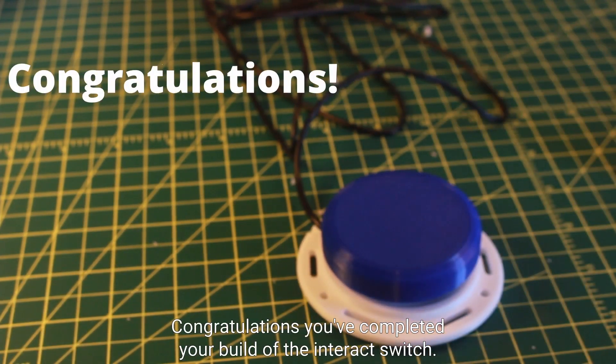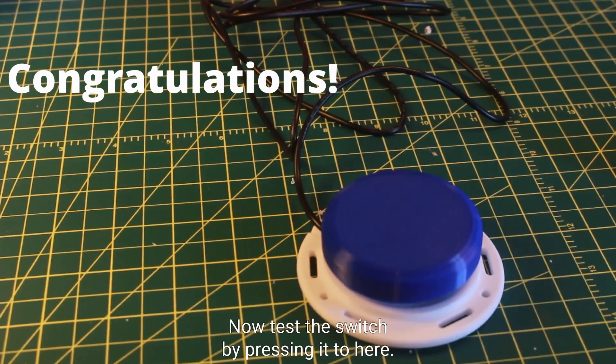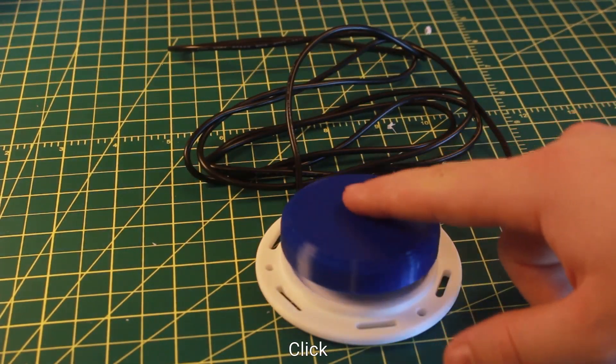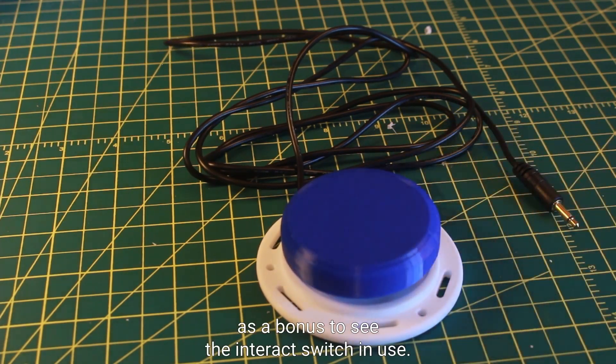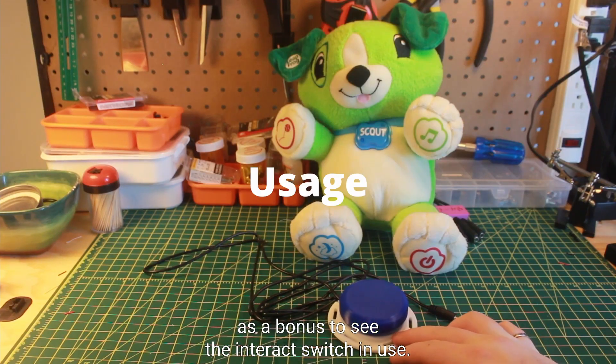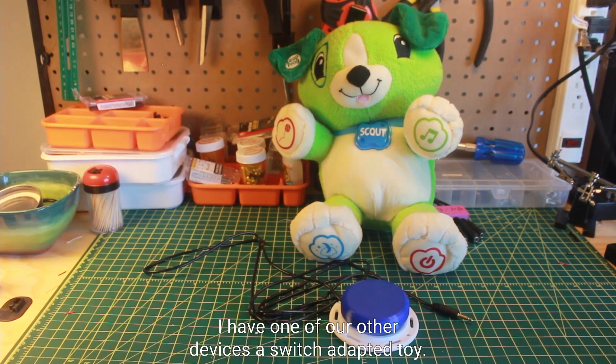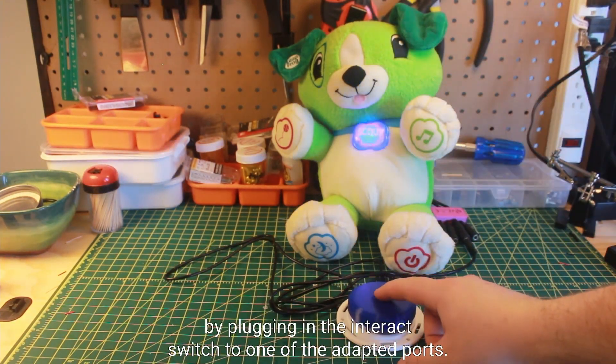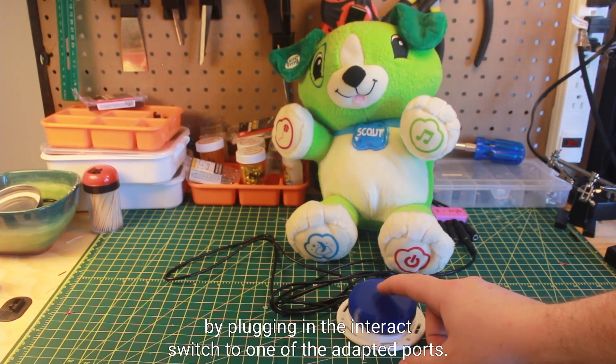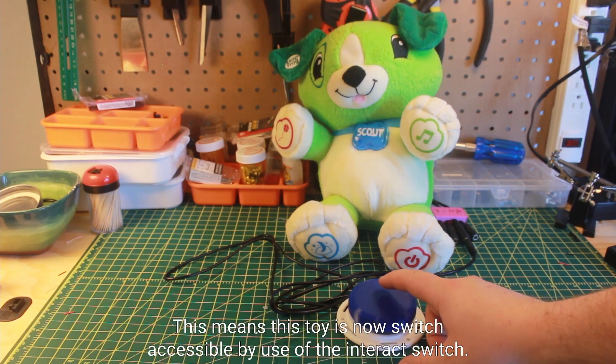Congratulations, you've completed your build of the Interact Switch. Now test the switch by pressing it to hear it click. As a bonus to see the Interact Switch in use, I have one of our other devices, a switch adapted toy. The adaptive toy can be controlled by plugging in the Interact Switch to one of the adapted ports. Now this means this toy is now switch accessible by use of the Interact Switch.